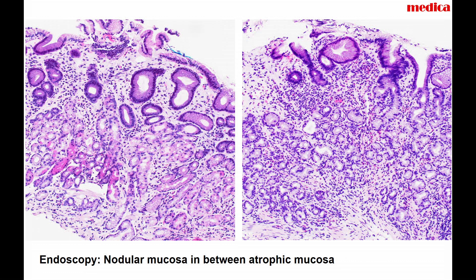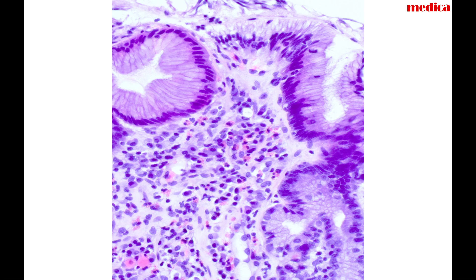What you also can see is quite pronounced infiltrative lymphocytes, plasma cells, and also quite a lot of eosinophilic granulocytes. And here you see the infiltrate by the lympho-plasma cells and eosinophils.